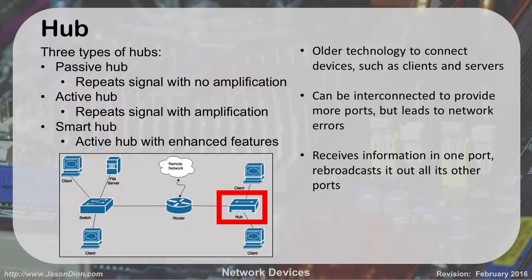Essentially, a hub allows you to interconnect hubs to create more ports, just like USB hubs that you can daisy-chain. With hubs, if you daisy-chain them too much, you'll get more network errors. The way a hub works is it receives information on one port and broadcasts it out all the other ports.